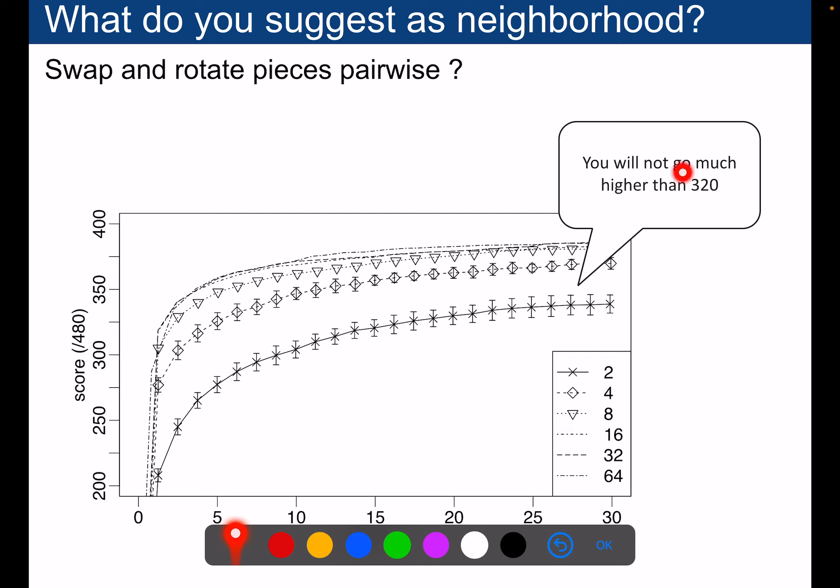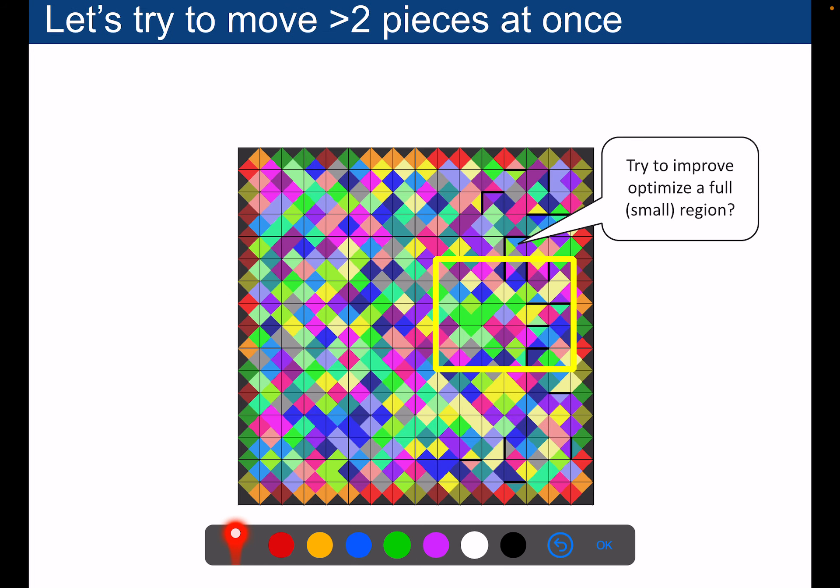So how to escape from this local minima? The goal is always the same, we need to enlarge a little bit the neighborhood. Maybe we could optimize a sub problem that would be easier, move more than two pieces at once. The problem is that it's as difficult as the original problem.